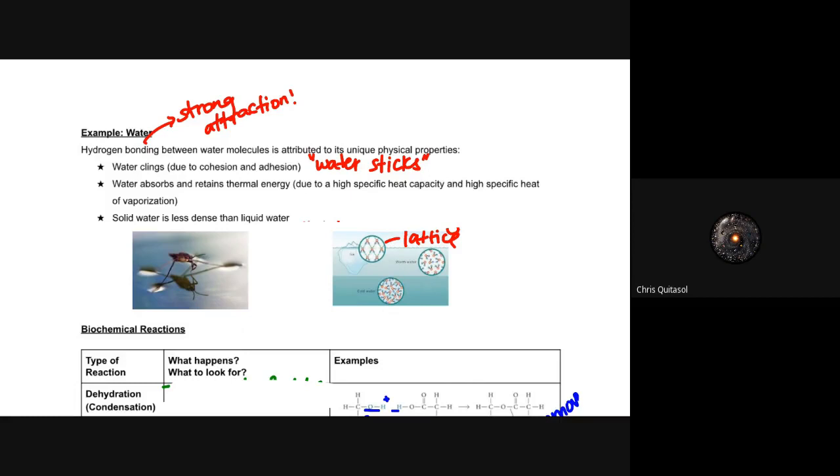Water can also absorb and retain an absolute huge amount of thermal energy. It has what's called that heat sink ability due to a high specific heat capacity and high specific heat of vaporization. Water can store an absolute metric ton of heat. The oceans and lakes of our planet are so good at storing that energy for a long period of time, slowly releasing that heat as we need it. It's a huge component as to why we have diversity of life on our planet.